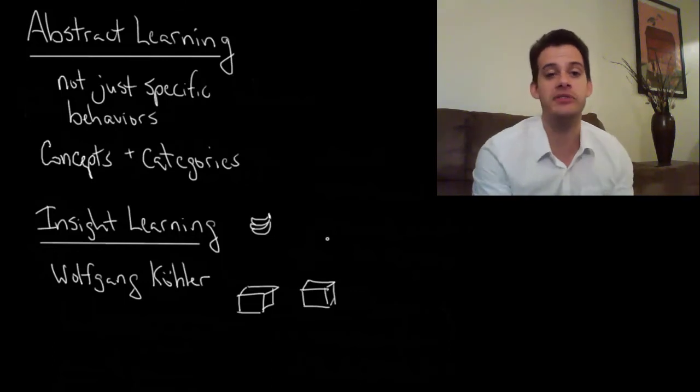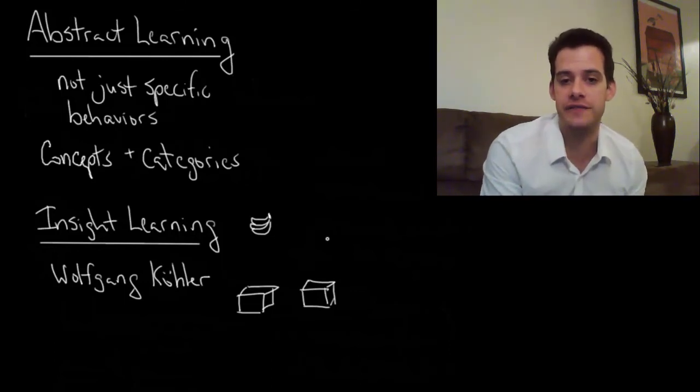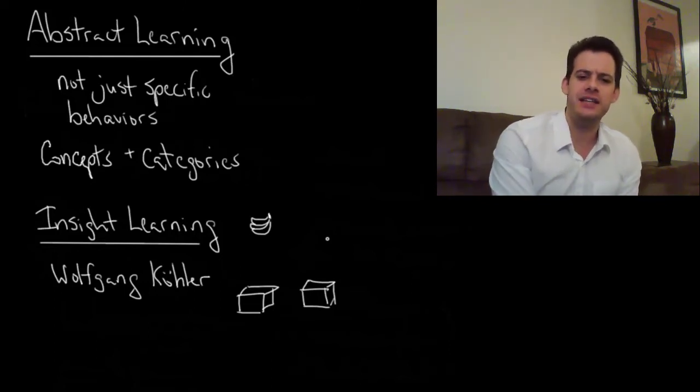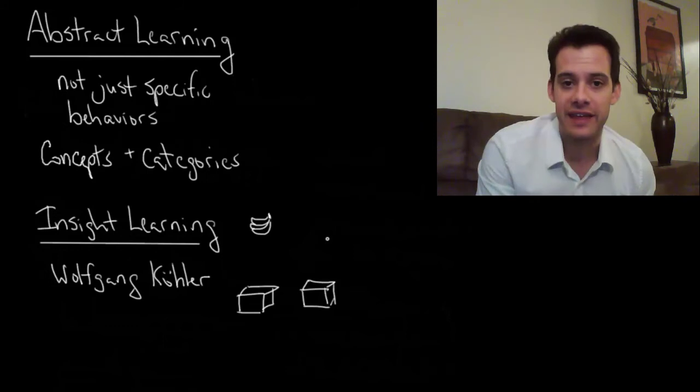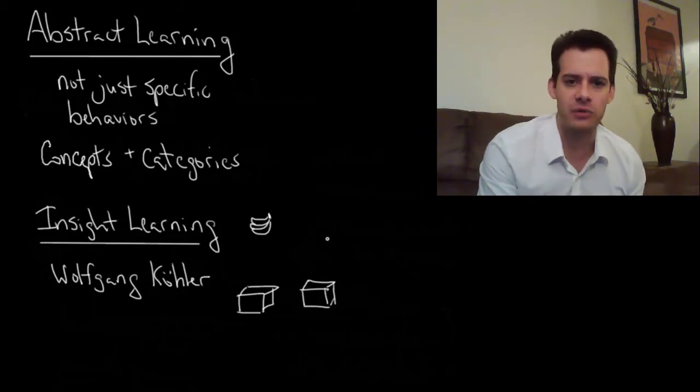Kohler simply observed the chimps trying to solve this problem: How do I get to those delicious bananas that are hanging from the ceiling? What he found was that the chimps didn't just randomly try things. They didn't just have this trial and error process where they stumbled around until a solution appeared.